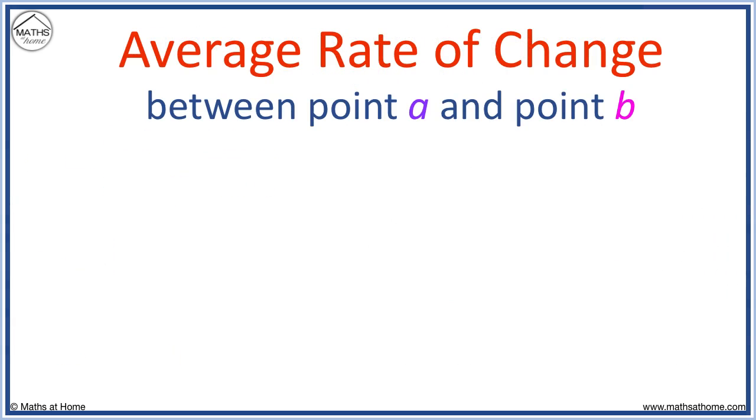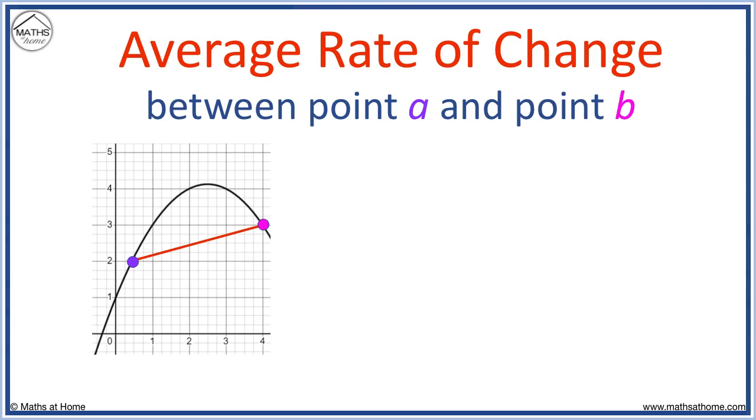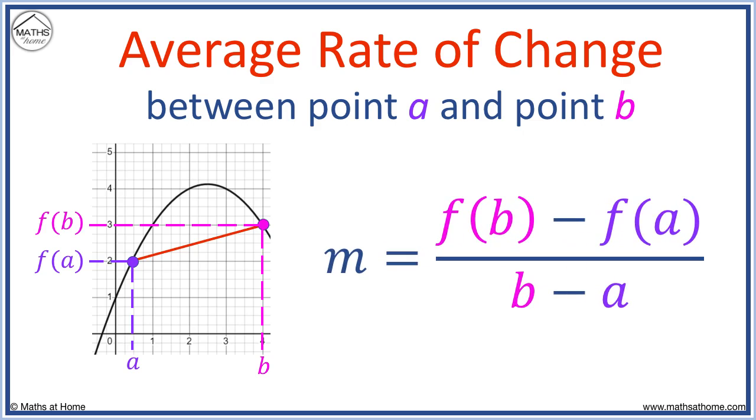We can write the formula for the average rate of change in a different way. At point A, the y-coordinate equals f of A. At point B, the y-coordinate is f of B. Therefore, the average rate of change equals f of B minus f of A over B minus A.